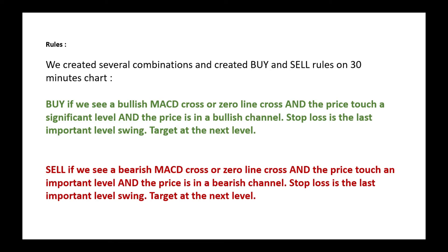Stop loss is at the last important swing level. Target is at the next level. For the sell side, it is the opposite: sell if you see a bearish MACD cross or zero line cross, the price touches an important level, and the price is in a bearish channel. Stop loss is the last important swing level and target is the next level.